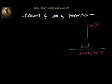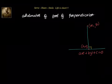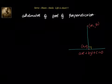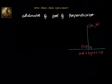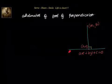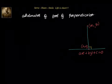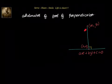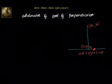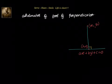Hello friends, welcome back. In this session, let us look at how to find out the coordinates of the foot of perpendicular. We have been given that ax + by + c = 0 is a straight line, for which the perpendicular is dropped from point (x1, y1). The foot of perpendicular is the point of intersection of these two lines, that is (h, k).